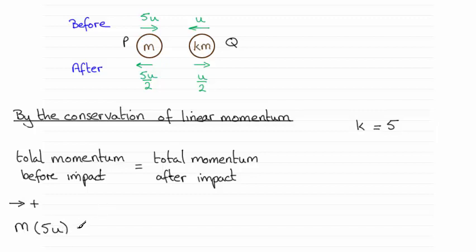Then to this we add the momentum of q. Here its mass is km, so put km in. We see that its speed is u, but it's going in the opposite sense to what we've got here. So its velocity will be negative u. So it will be its mass times its velocity, which will be minus u. So that's the total momentum before impact.